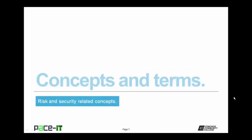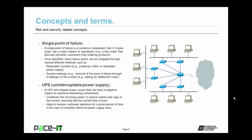Now let's talk about some concepts and terms you should know. First up is single point of failure — a system or component that, if it goes down, has a major impact on operations. An example is if a key router goes down and prevents customers from ordering products. Once identified, these failure points can be mitigated through redundant systems, such as adding a backup router or a redundant power supply, or through system redesign — removing that point of failure entirely.